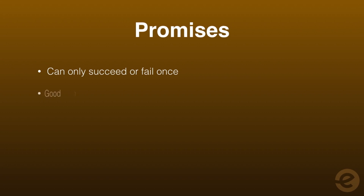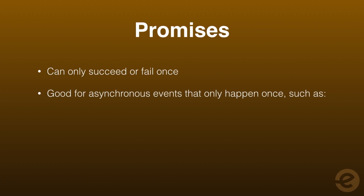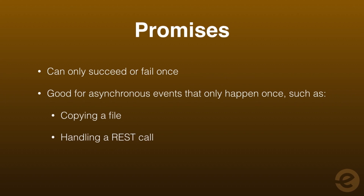A promise can only go from being in a pending state to being in a resolved or rejected state. It cannot go back to being in a pending state. This behavior makes promises ideal for events that need to only succeed or fail once, such as copying a file, processing a network request, and more. It's also ideal for handling events that have already happened.